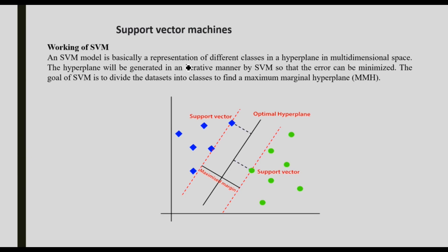SVM model is basically a representation of different classes in a hyperplane in multi-dimensional space. That means more than one dimensional, or two to three dimensional space, where we classify them.